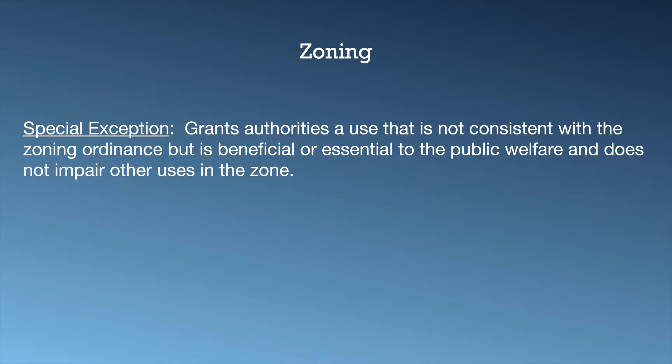A special exception under zoning is a bit different — it's really for public use, government use, or authority use. Think of a fire station: there is no specific zoning area designated just for fire stations. It's either residential, commercial, mixed use, whatever — but they want to put a fire station or police station there. So a special exception would be granted to them so they can build something that doesn't meet the zoning for that area. Typically it's reserved for government authorities or some sort of authority-type use.